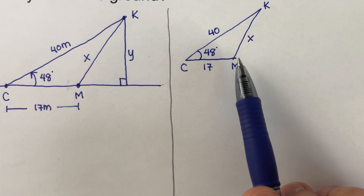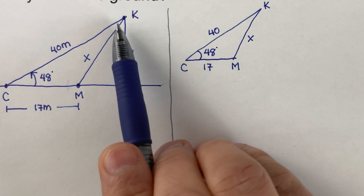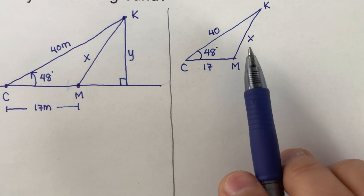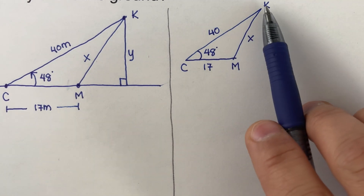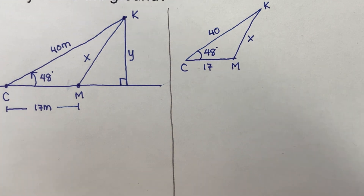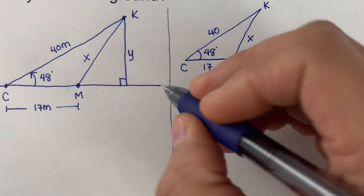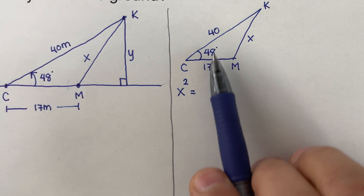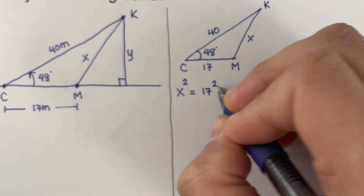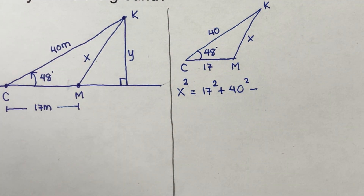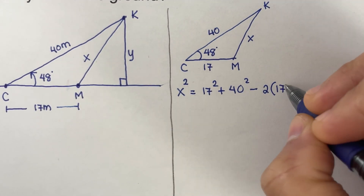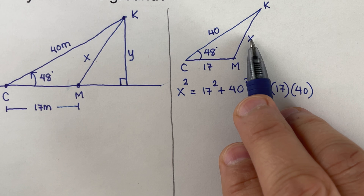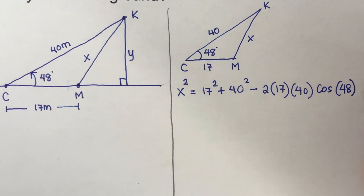We use the law of cosines to solve for x, the line of sight from Mark's location to the kite. The equation is: x² = 17² + 40² − 2(17)(40) cos(48). This uses the law of cosines: the square of the side across from an angle equals the sum of the squares of the other two sides minus twice their product times cosine of the included angle.